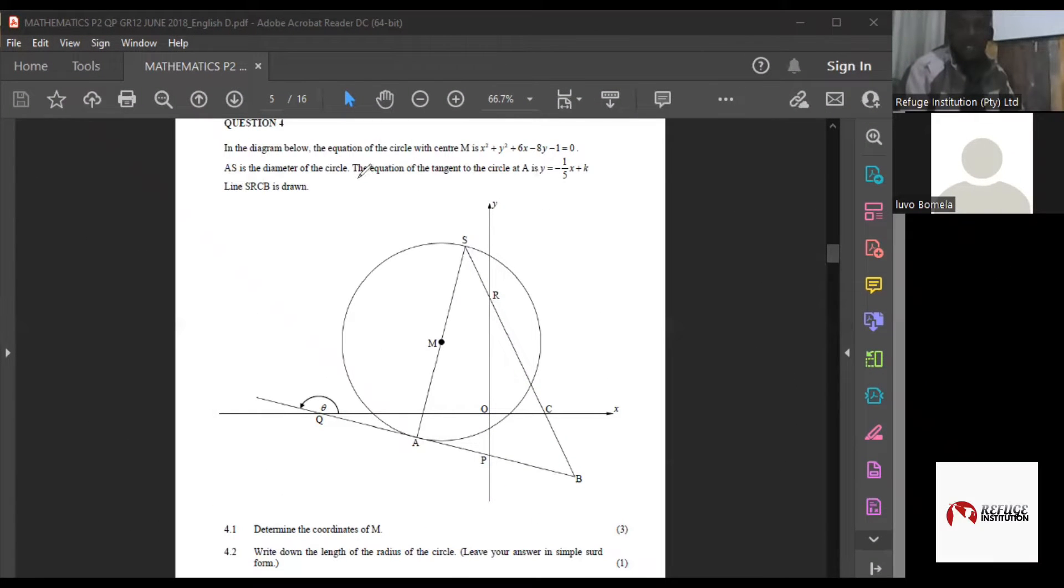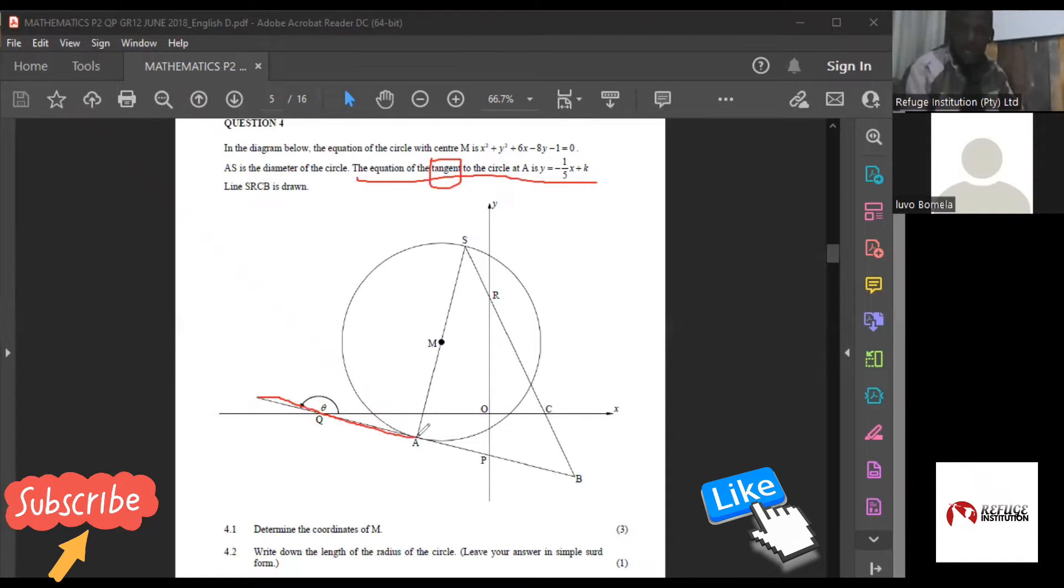So they are saying that the equation of the tangent to the circle is this one. But what we need to find is the equation of this line, and this line is a diameter. It's not the tangent. So it is given to us that the tangent...